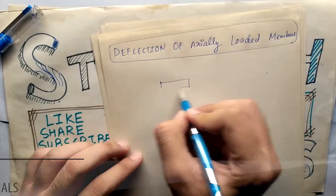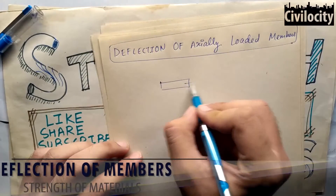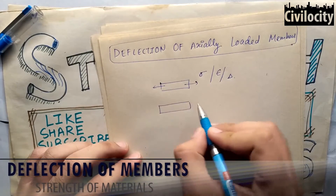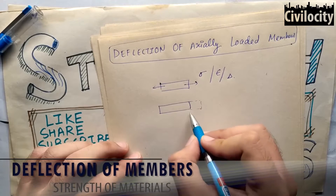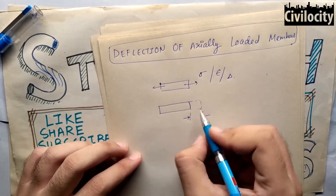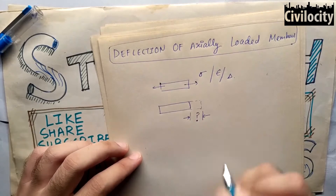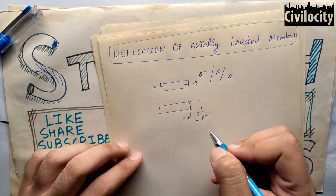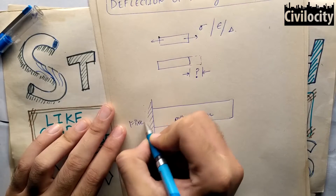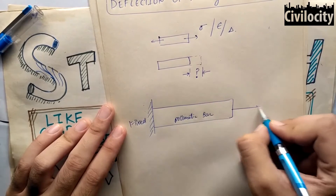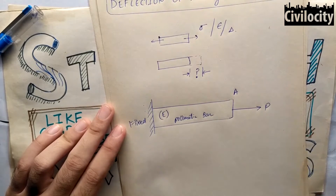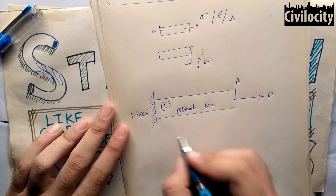We are talking about what is stress produced in members, what is deflection produced in members, what is extension or shortening and what is change in its length. Let's start with a simple member. Suppose we have a prismatic bar of length L, fixed on one side and load is applied on the other side. A is the area of cross section and E is the modulus of elasticity of this prismatic bar.